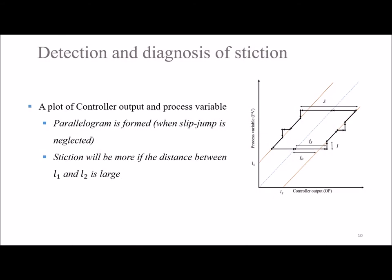When the controller output and the process variable are plotted against each other, if slip jump is ignored in control valve movement, we see a parallelogram-like curve appearing. The larger the distance between L1 and L2 in the figure, the more pronounced is the effect of stiction.